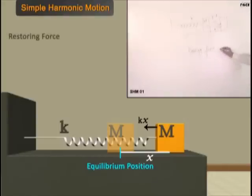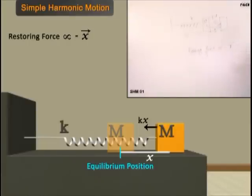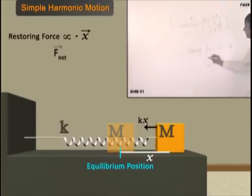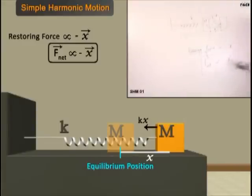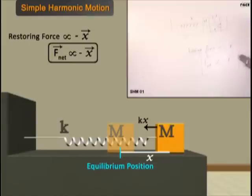Simple harmonic motion: if the restoring force is proportional to the displacement, the power of displacement should be 1. If the restoring force is linearly proportional to the displacement from the mean position and is oppositely directed — that minus sign shows restoring nature, opposing the displacement. So if the net force acting on a body when displaced is restoring in nature and linearly proportional to the displacement from equilibrium — i.e., power is 1 — then the motion will be simple harmonic. If the power is not 1 (e.g., power 2, 3, or 3/2), it will be harmonic but not simple harmonic.